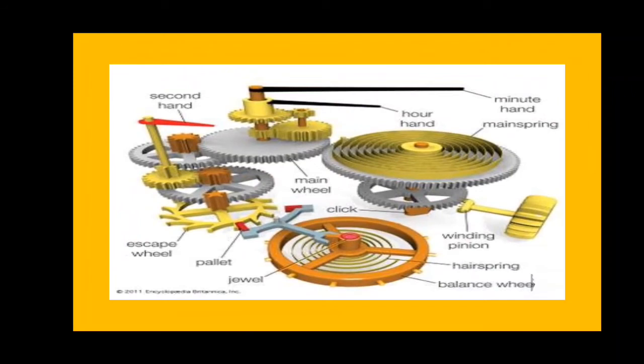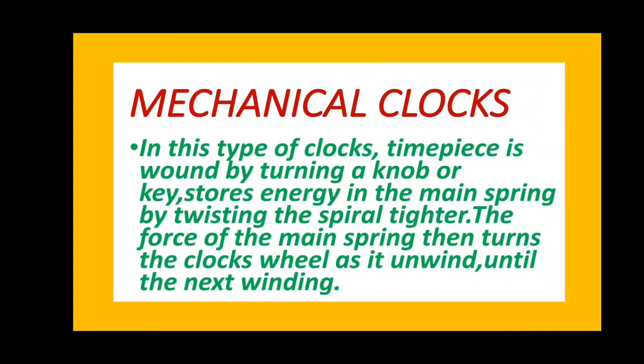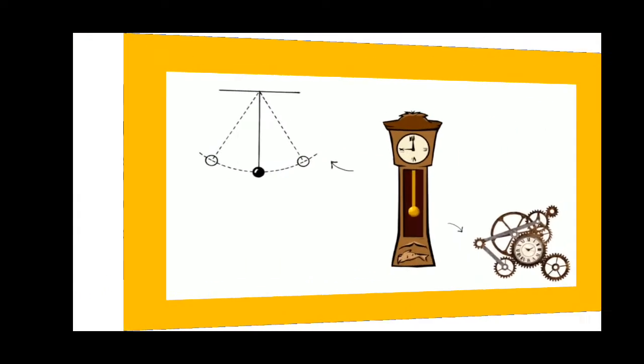The same way, these clocks are called mechanical clocks in which the timepiece is wound by turning a knob or key and stores energy in the main spring that turns the clock's wheel as it unwinds until the next winding is done. We had to find an alternative because they were not accurate. They used to have manufacturing defects. As you all know, no two objects can be made similar, so no two clocks could be made similar. There was a time difference.